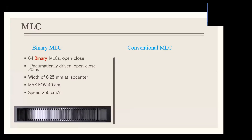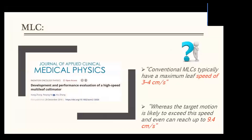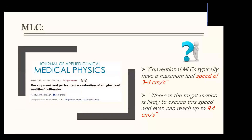The MLC speed is 250 cm per second. In a quick comparison with conventional linacs, the speed there is significantly less — the main reason is that the rotary motors do not provide adequate torque. A paper published in Medical Physics argues that conventional MLCs typically have a maximum leaf speed of 3 to 4 cm per second, whereas target motion can reach up to 1.4 cm per second, and these discrepancies may influence obtaining optimum beam quality and therefore influence tumor control probability.